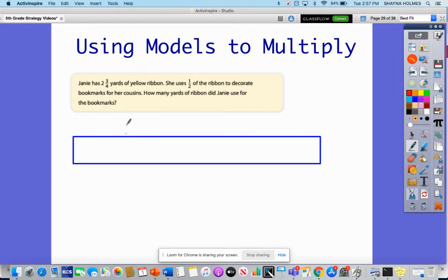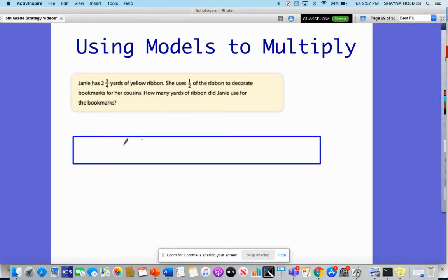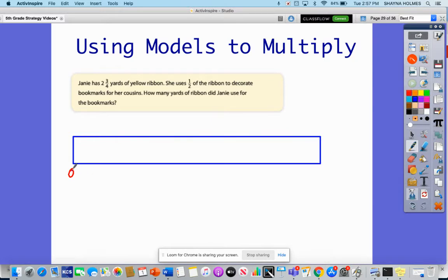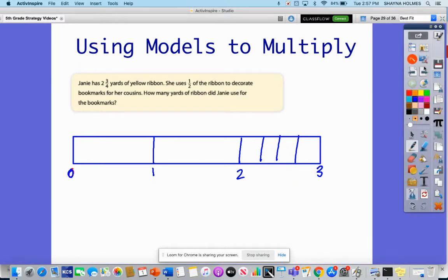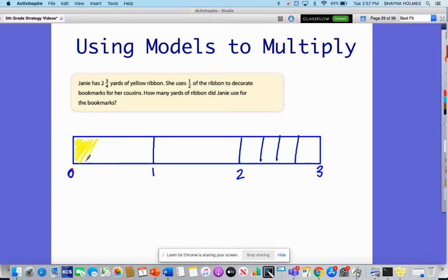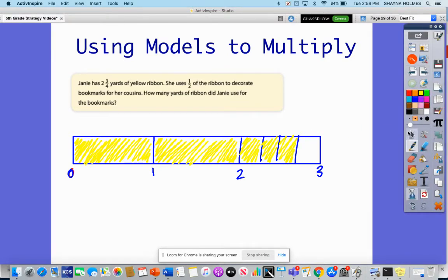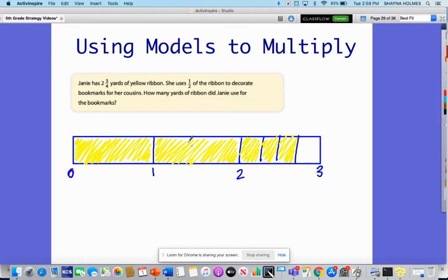I'm going to break this into sections. Since I have more than two, I'm going to do zero to three. So I have zero, one, two, and then I have ¾ right here. I'm going to go ahead and shade in our yellow ribbon. So we have 2¾.